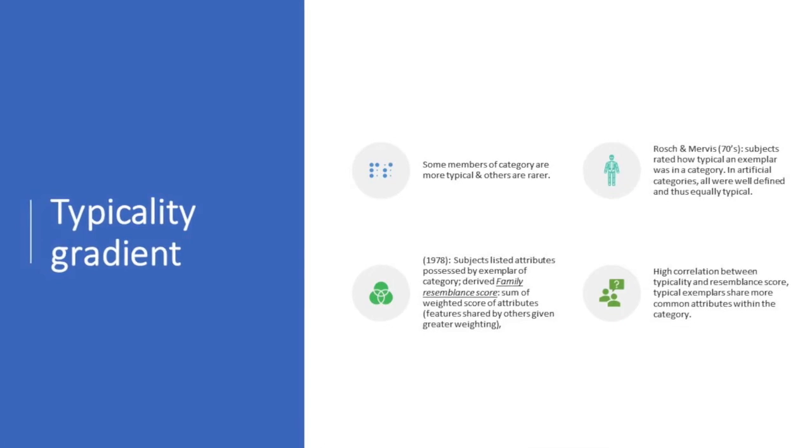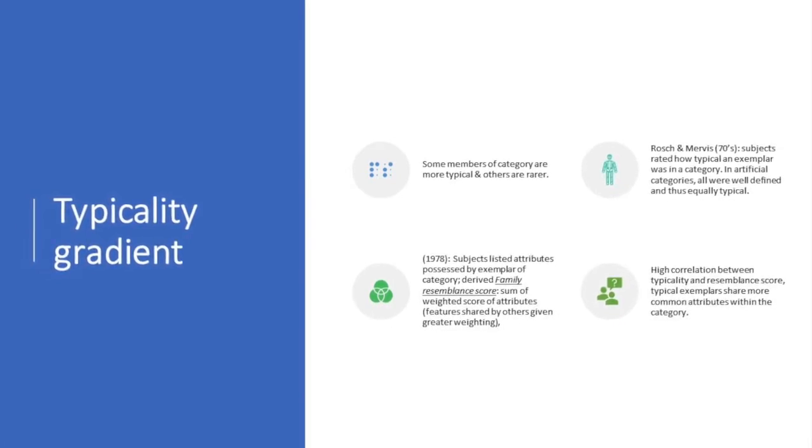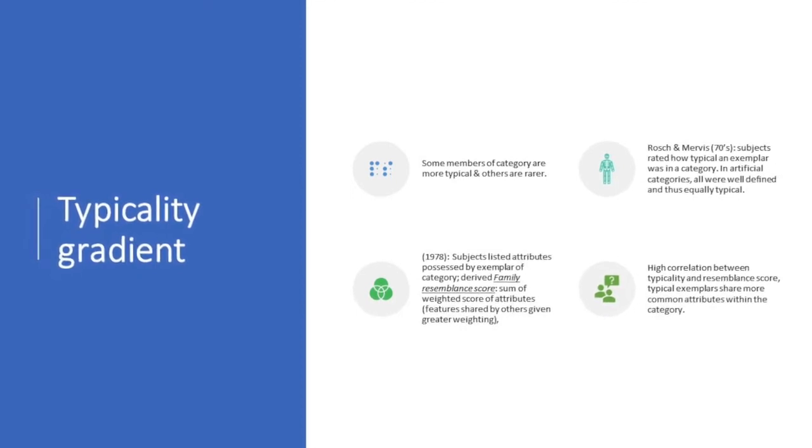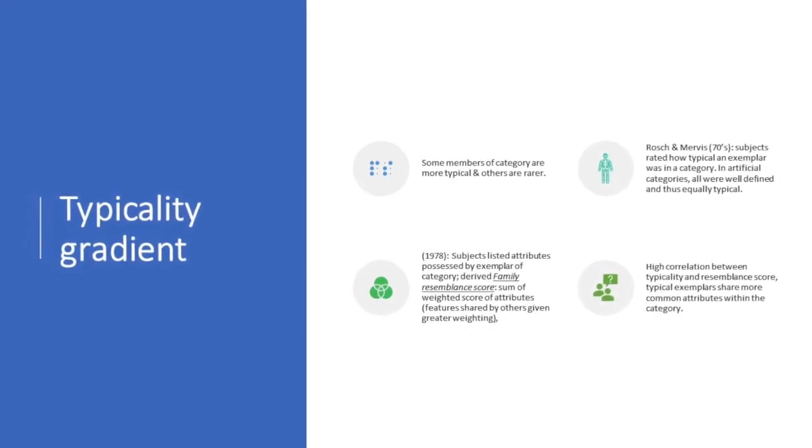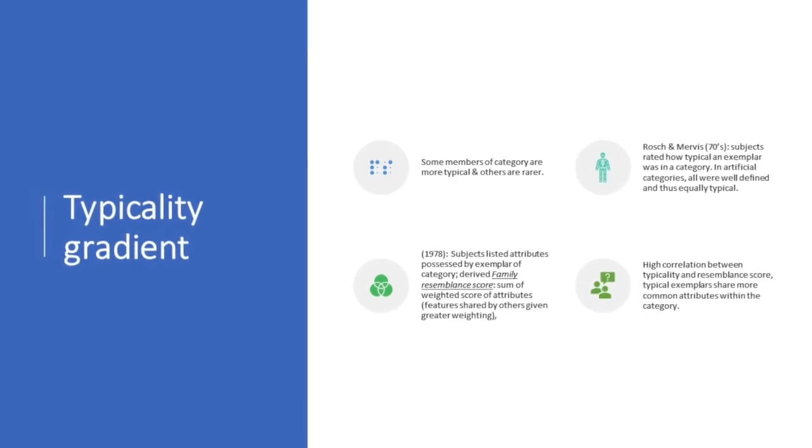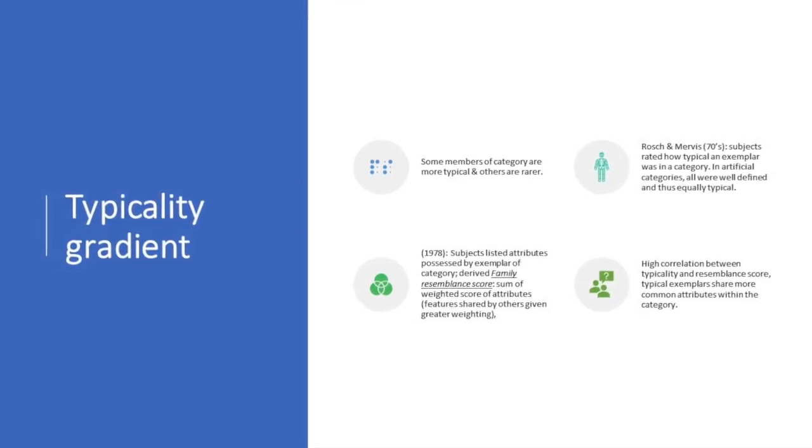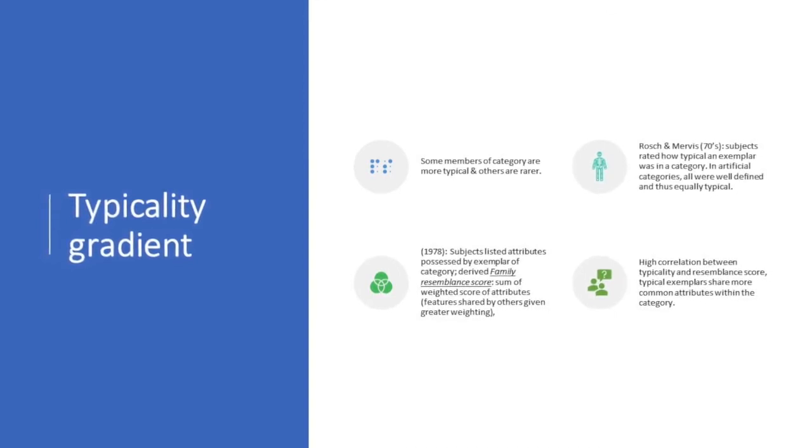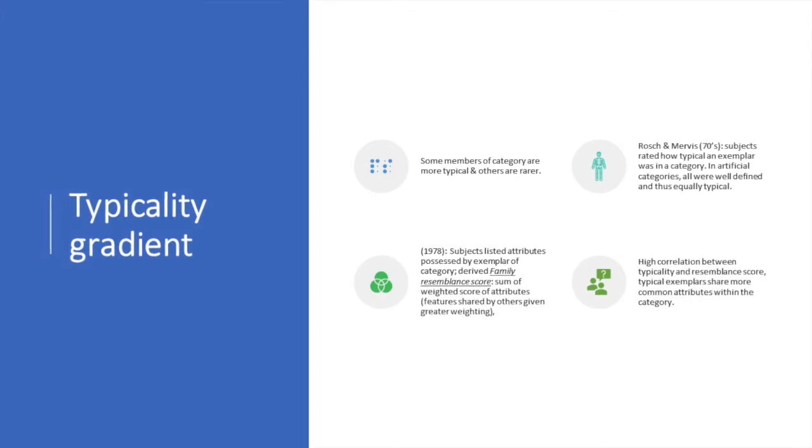In 1978, subjects listed attributes that were possessed by an exemplar of categories and they derived the family resemblance score or the sum of weighted scores of attributes which are features shared by others given greater weighting. High correlation between typicality and resemblance scores indicate that typical exemplars share more common attributes within the category.